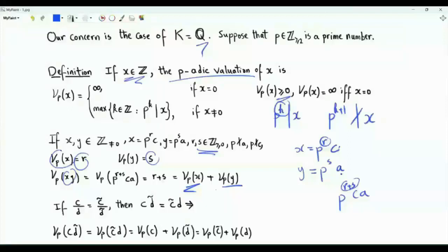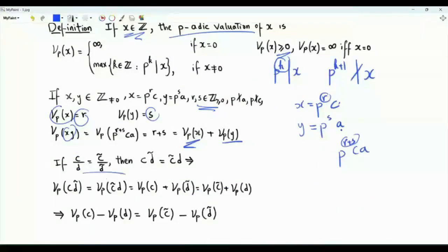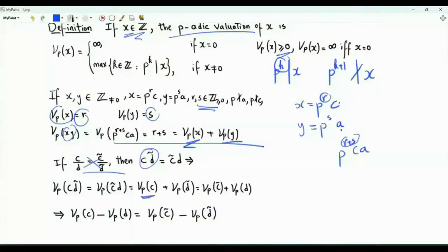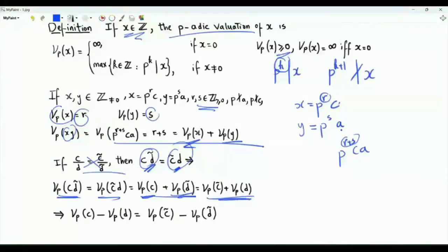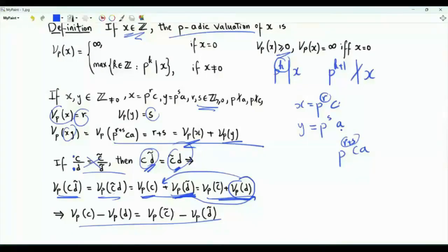Now a little exercise relevant for extending the valuation to non-integer rationals. Suppose c/d equals c̃/d̃; cross-multiplying gives c·d̃ = c̃·d. The valuation of c·d̃ is the sum of the valuations of c and d̃, and similarly for c̃·d. Since these integers are equal, their valuations are equal, giving us: valuation(c) − valuation(d) = valuation(c̃) − valuation(d̃).